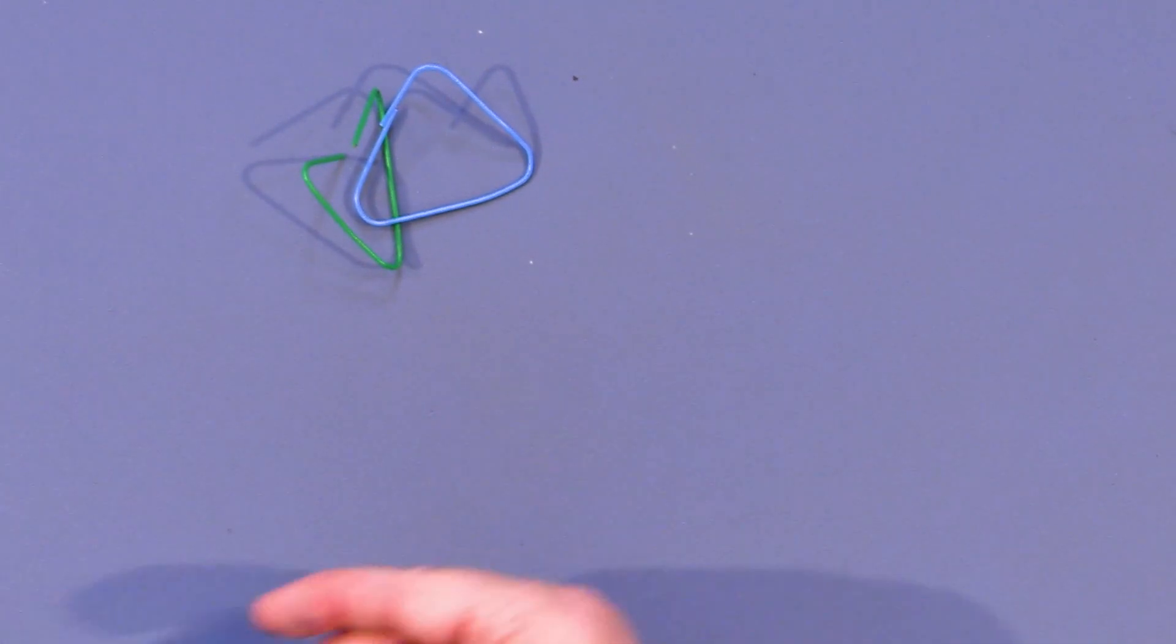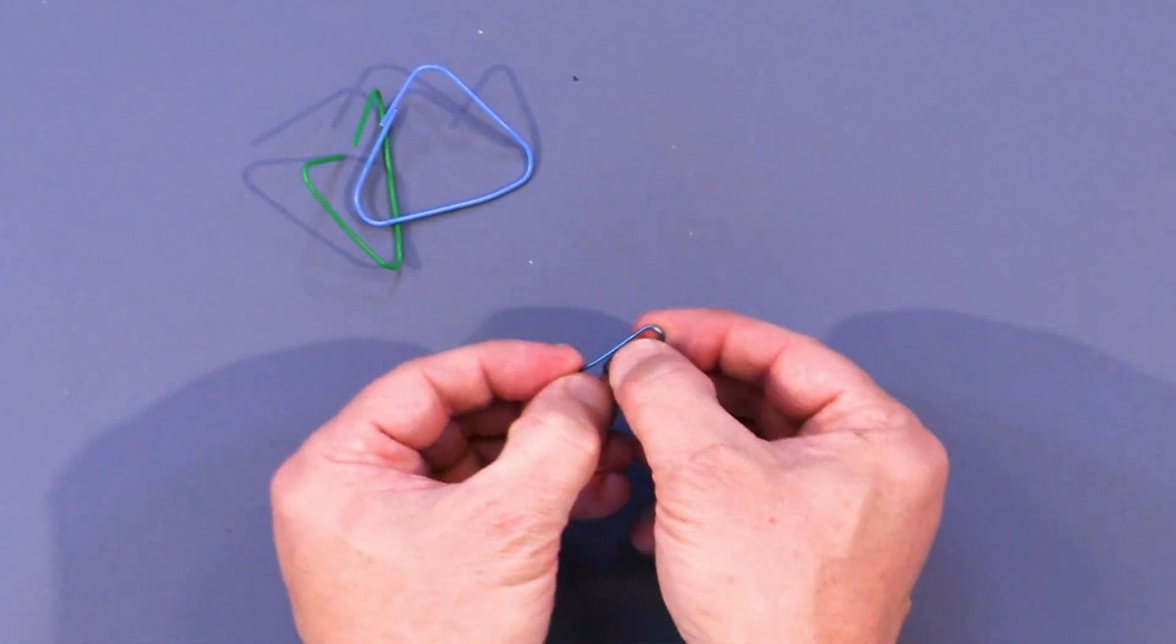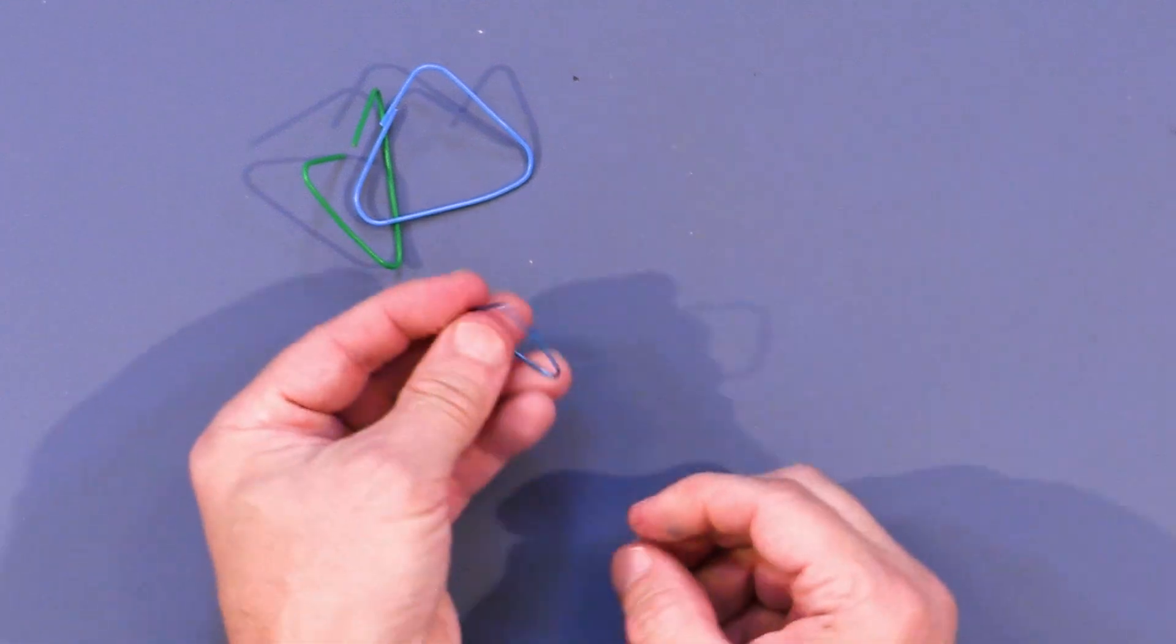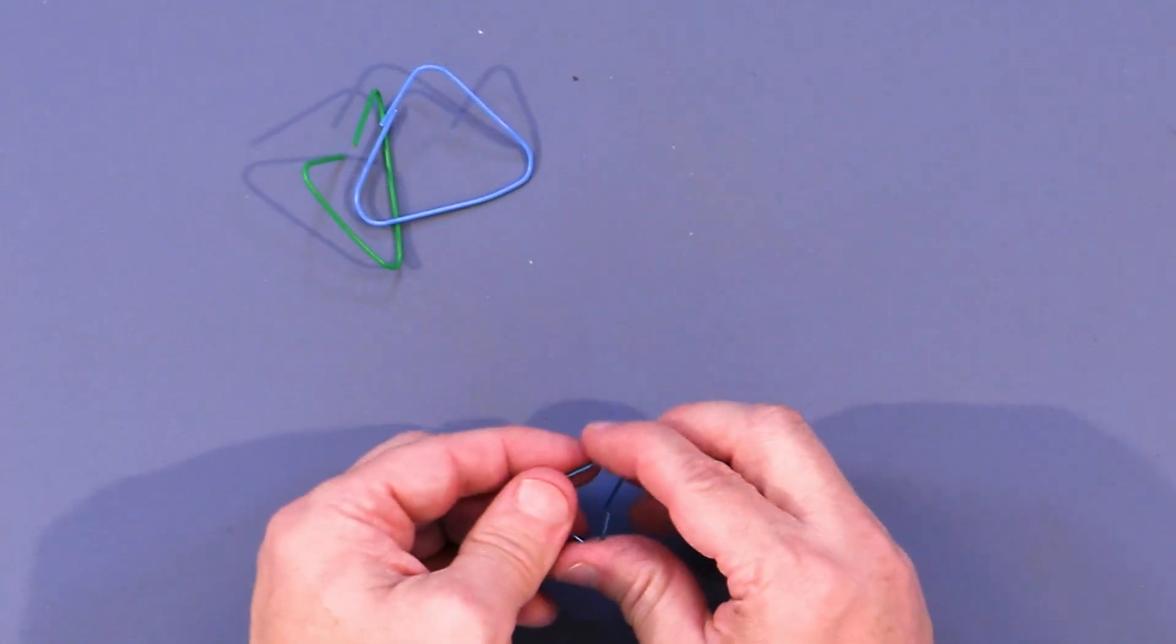And then what you do, and you can do it with any paperclip, by the way, I can take a smaller one. This is a smaller paperclip. You just open it up, open it up like that, so you have sort of a triangle and you bend it toward yourself again, so you can sort of stand it up there.